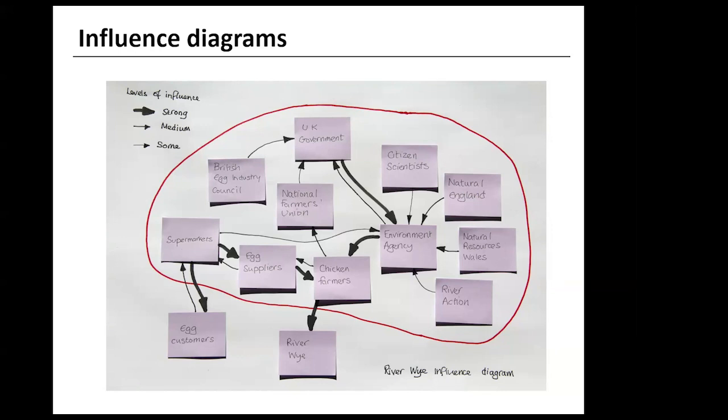What is important in an influence diagram is to get a sense of where the strongest influences are. So I've used three line thicknesses to show strong, medium and some influence. We also need to look out for reciprocal influencing, and I draw this using reverse arrows.